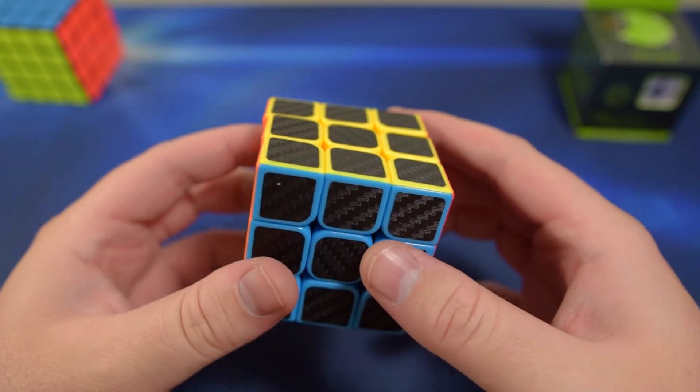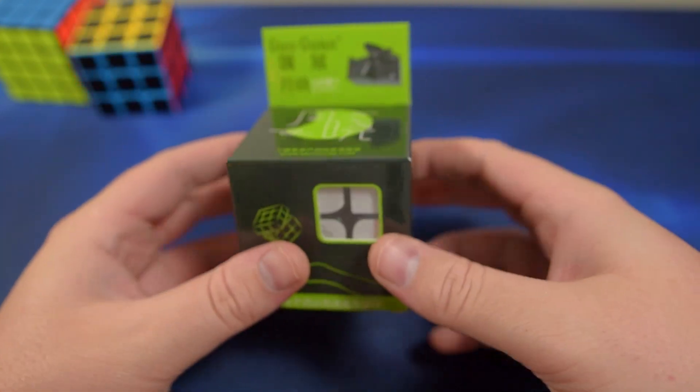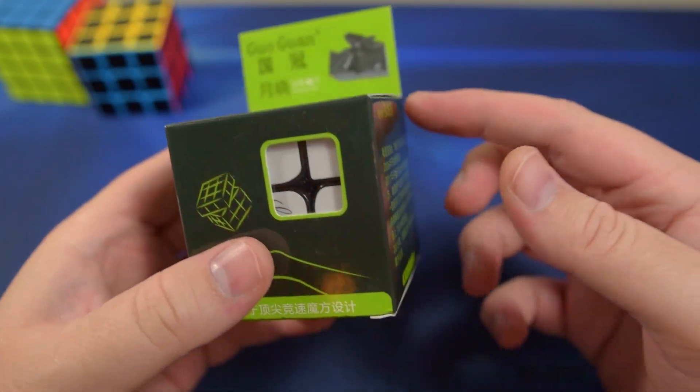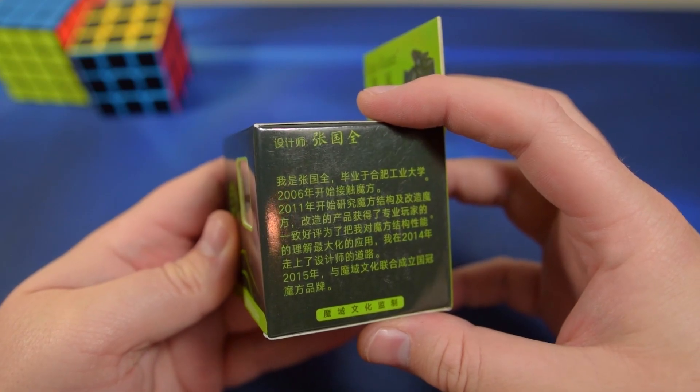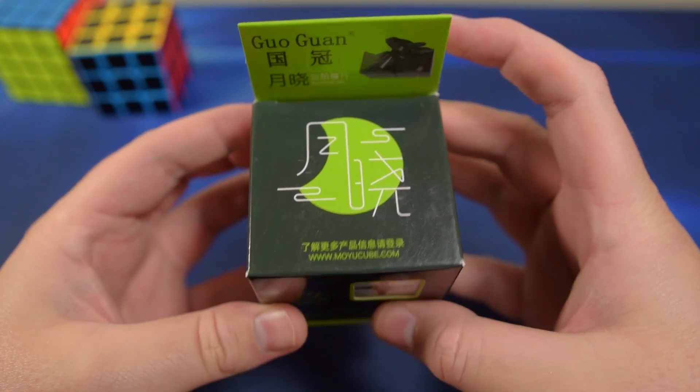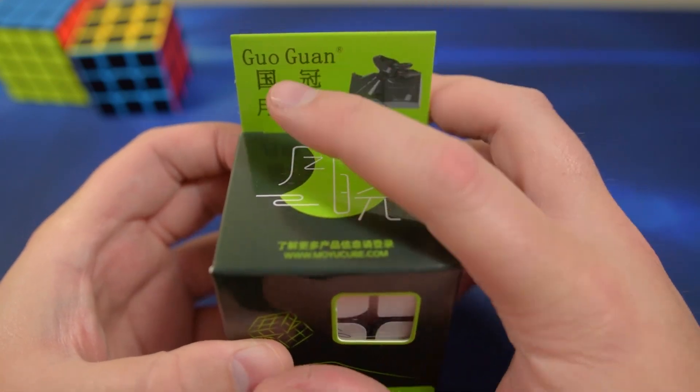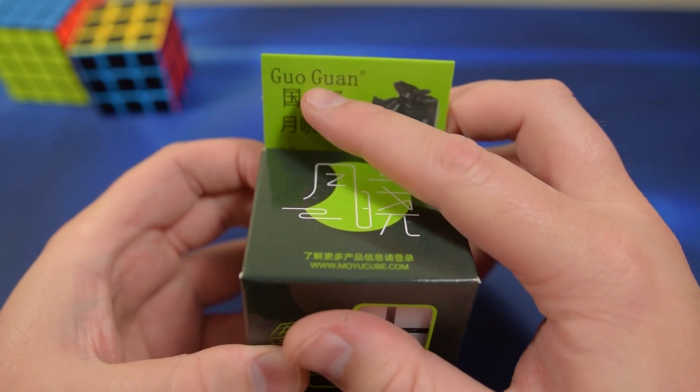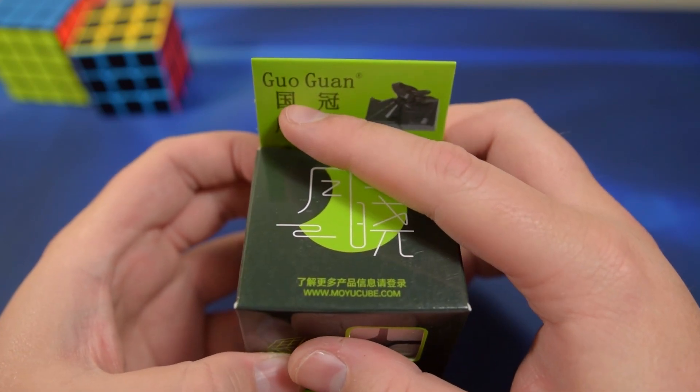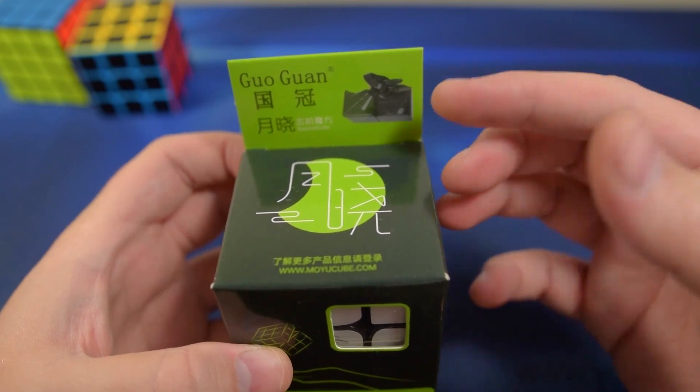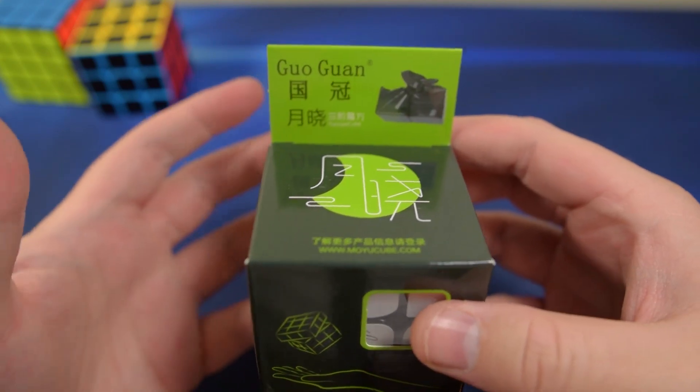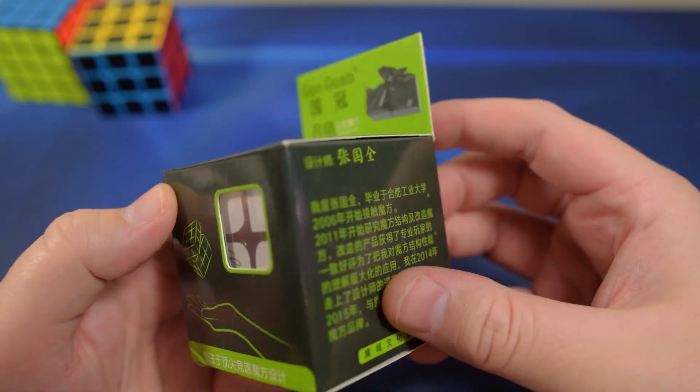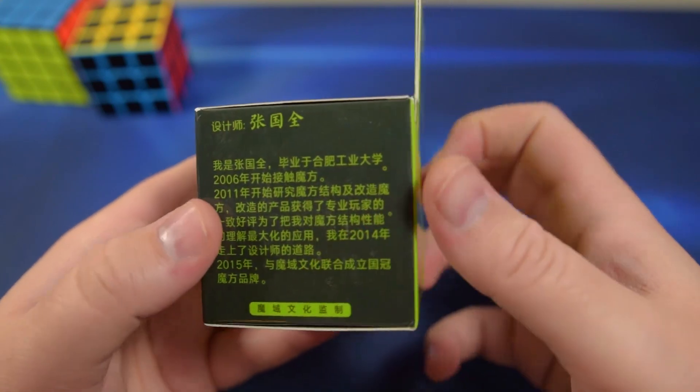But yeah, that looks pretty cool, but let's put that aside and now the main event. I'm really excited for this puzzle. I've heard a lot of good things about it. And just so you guys know, GuoGuan is the producer. It's kind of like Kong's design, where it's a designer that MoYu is supporting, starting their own cube brand. So we can expect to see some more puzzles from GuoGuan in the future.